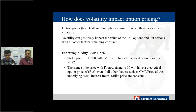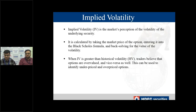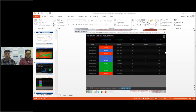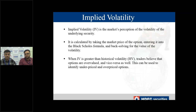Implied volatility is the market's perception of the volatility of the underlying security. If traders expect the stock to become more volatile, the IV normally jumps. Before major events like elections or quarterly results, we will always see that IV tends to rise higher. IV can be calculated by taking the market price of the option and back-solving it using the Black-Scholes formula. When IV is greater than historical volatility, the options are overpriced. If options are overpriced, it is better to sell options; if underpriced, it is better to buy.